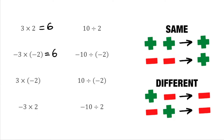For the next one we have a positive times a negative, so because the signs are different, this is going to give us a negative result, and then 3 times 2 is 6, so this would actually be negative 6. And again we've got the same thing but just with a negative on the other side — a negative times a positive — so that's going to be a negative again, and the numbers give us 6. So the key takeaway here is: if the signs are the same, we end up with a positive result, and if the signs are different, we have a negative result.